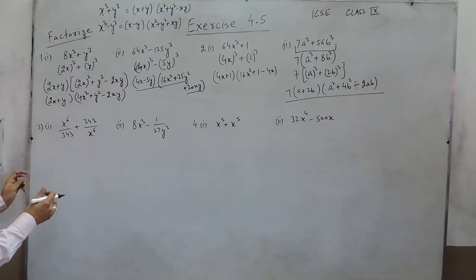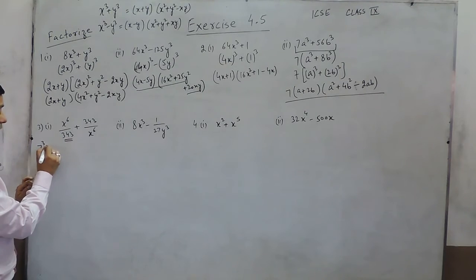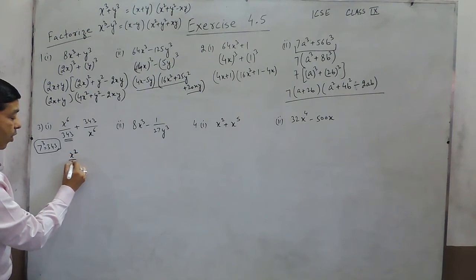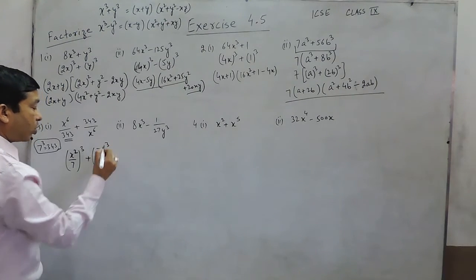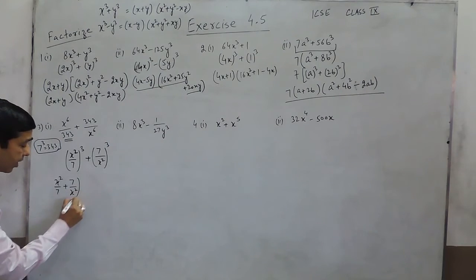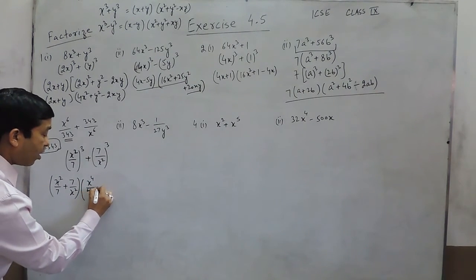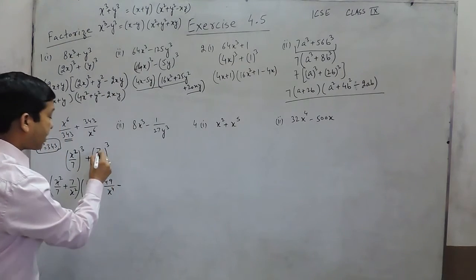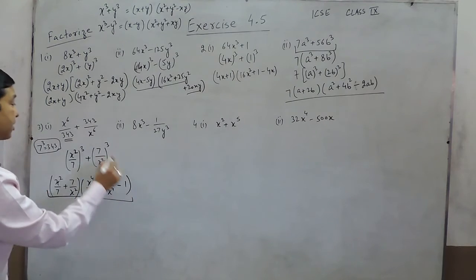For this question we need to recognize that 343 is the cube of 7. It can be written as (x²/7)³ plus (7/x²)³. Applying the identity x³ plus y³, the first factor is (x²/7 + 7/x²), and the second factor is (x⁴/49 + 49/x⁴ − 1), because the product of the two terms simplifies to 1 since 7 cancels with 7 and x² cancels with x².